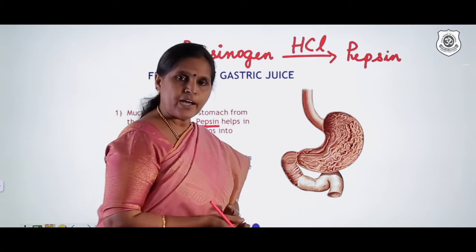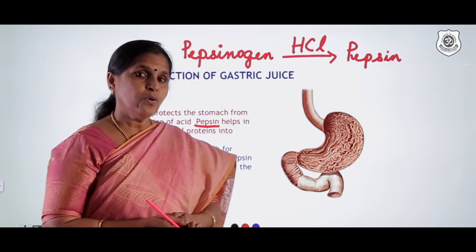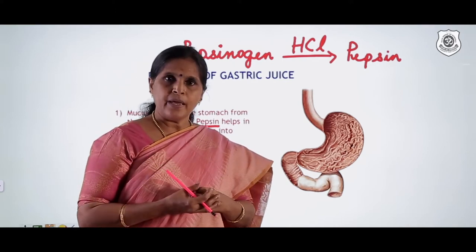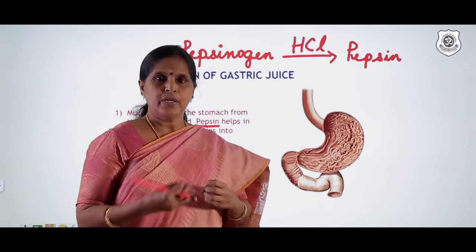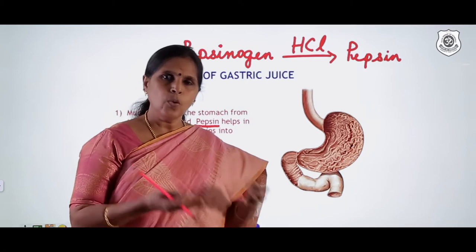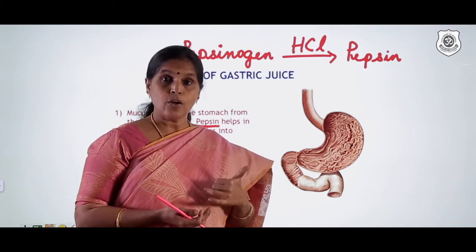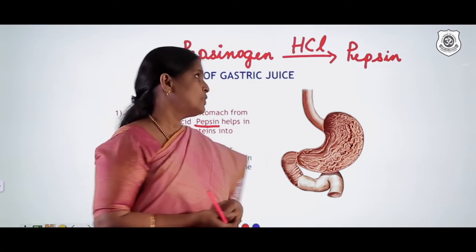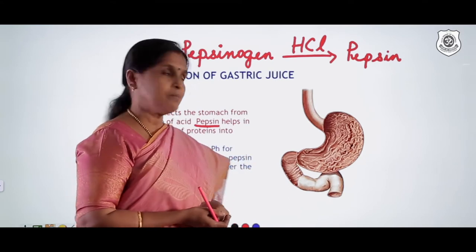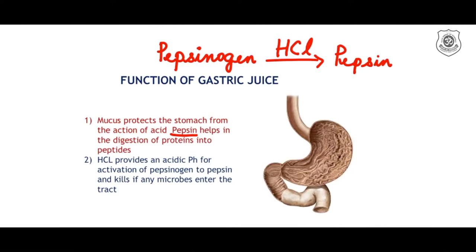Hydrochloric acid has two functions. First, it converts the inactive pepsinogen into active pepsin so it can carry out protein digestion. Second, HCl provides a low acidic pH in the stomach which kills any microbes that enter through the food, acting as a kind of immunity.